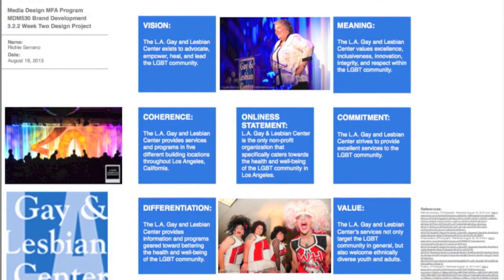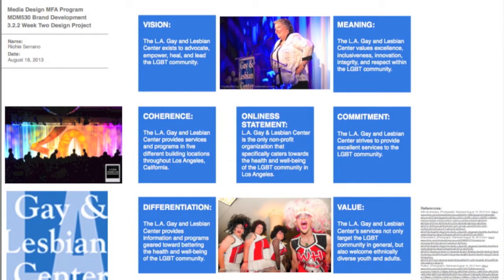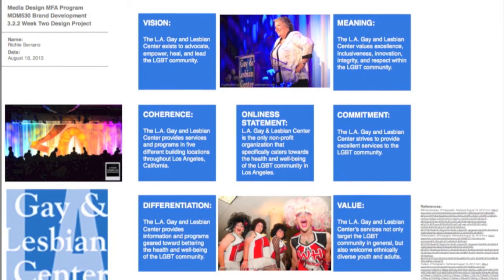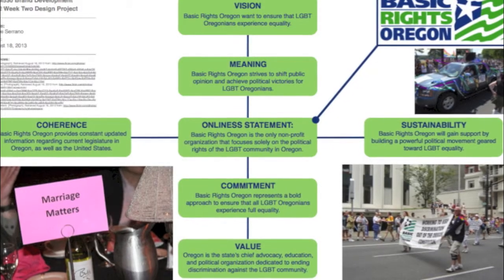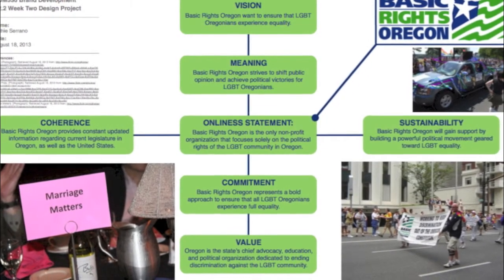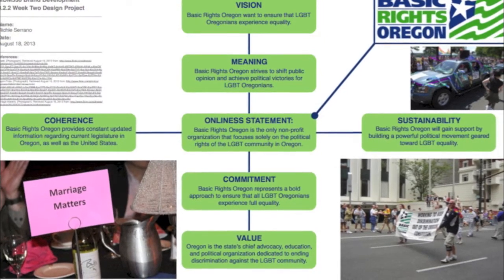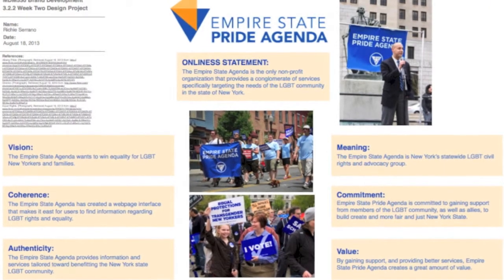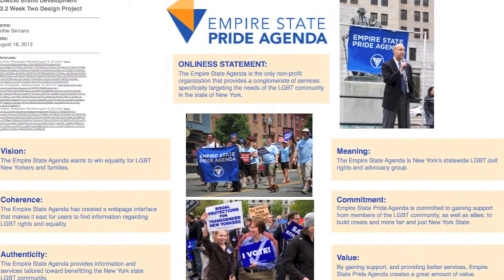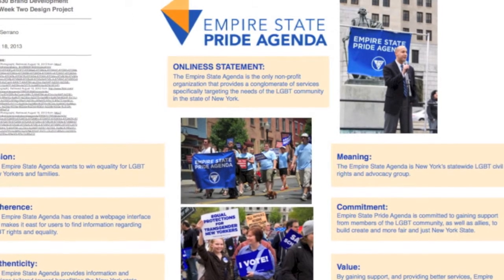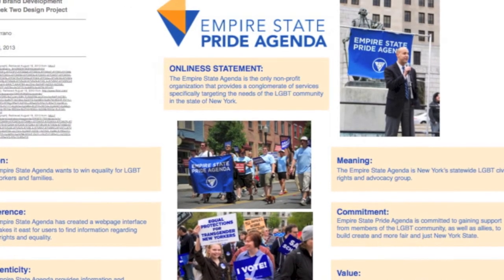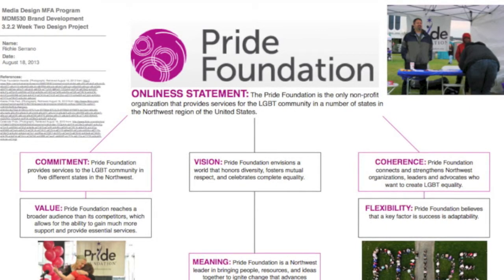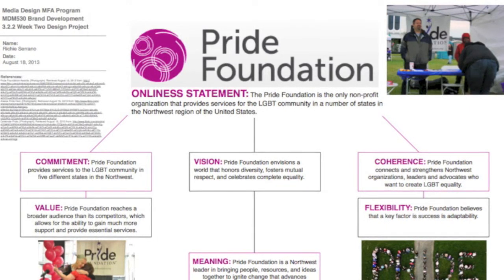First, I'll start off with the competition. The LA Gay and Lesbian Center, which has five locations within the city, helps provide health and wellness services toward the LGBT community. Basic Rights Oregon helps advocate rights and equality for the LGBT community; however, its services are only for people who live in Oregon. The Empire State Pride Agenda provides the same services but only targets New York State. The Pride Foundation is different because it reaches the Northwest region of the United States and not just targeting one single state.